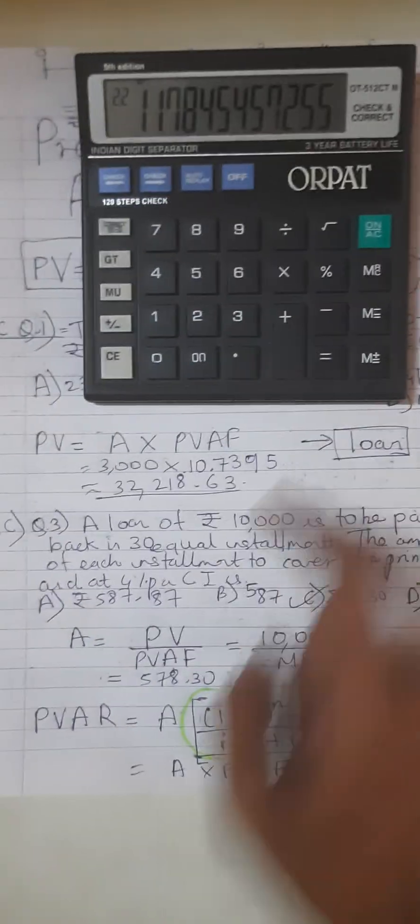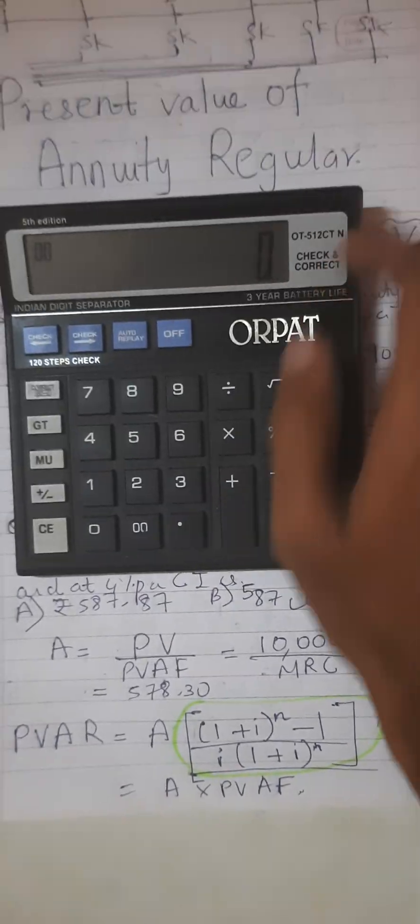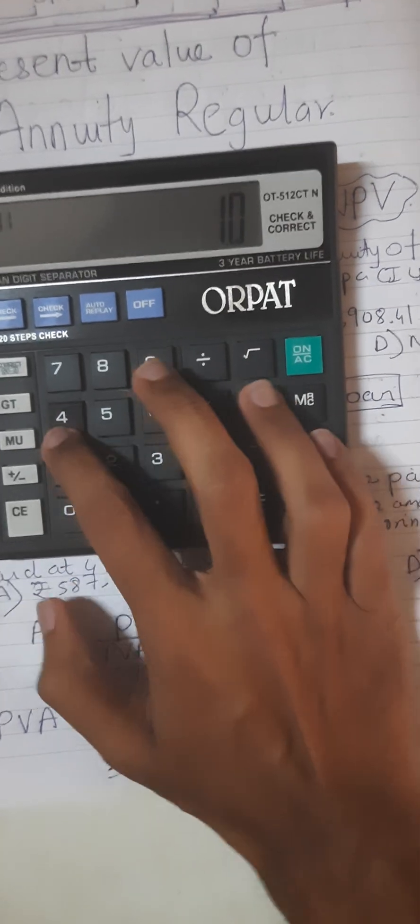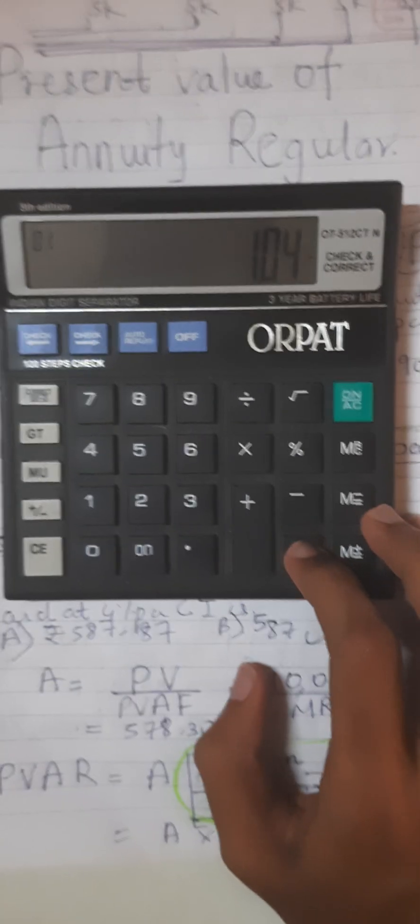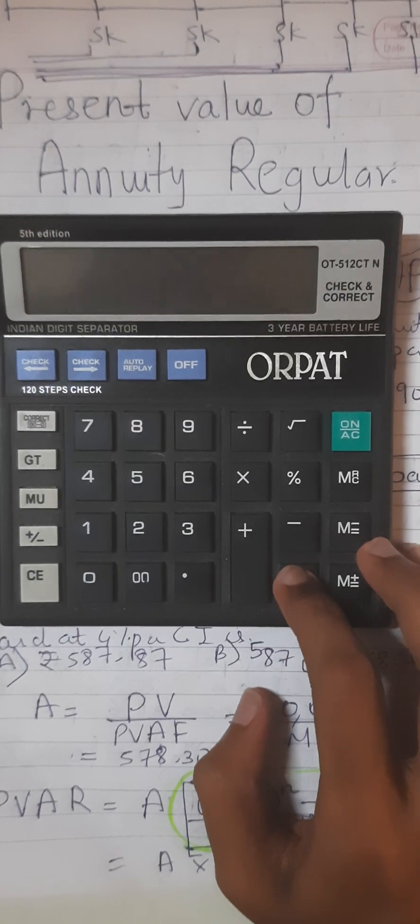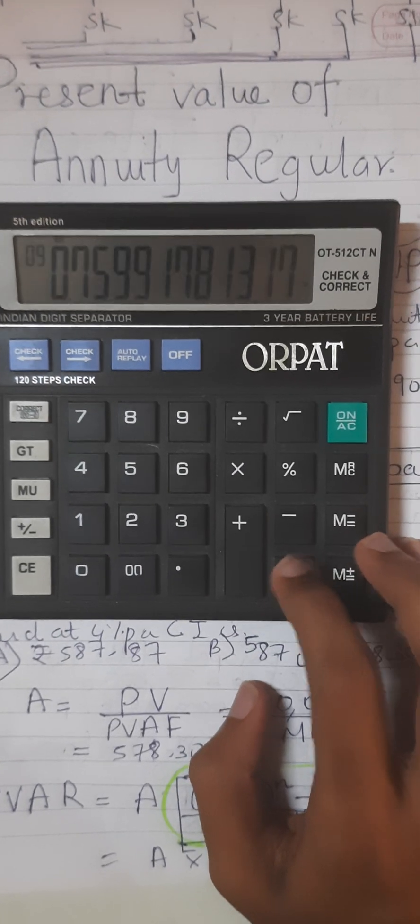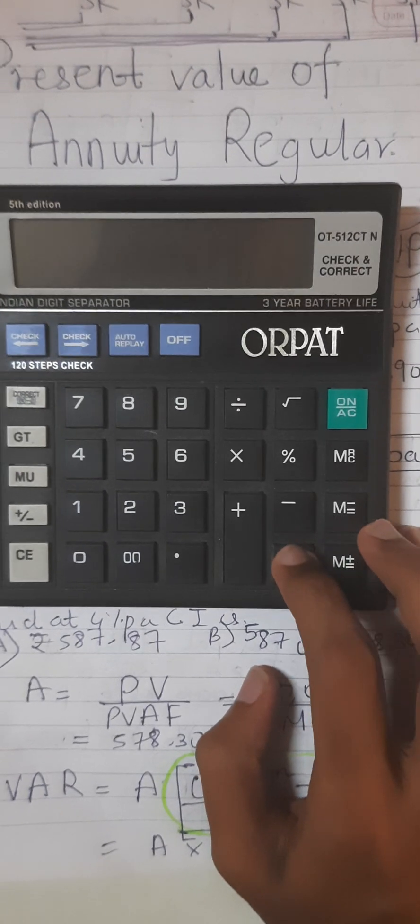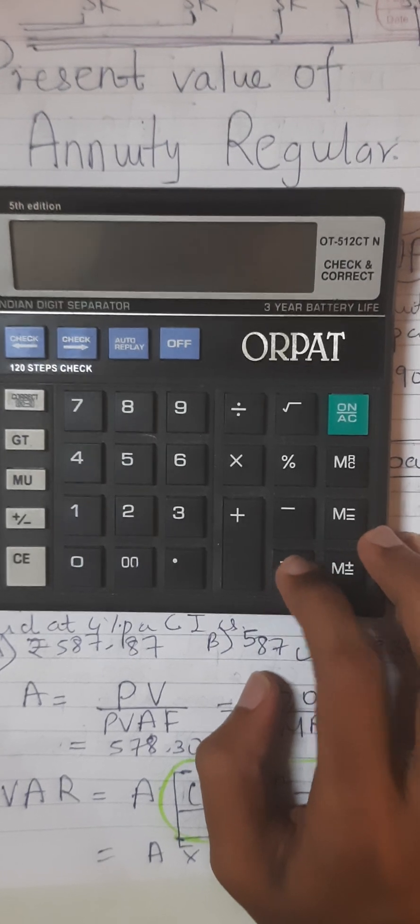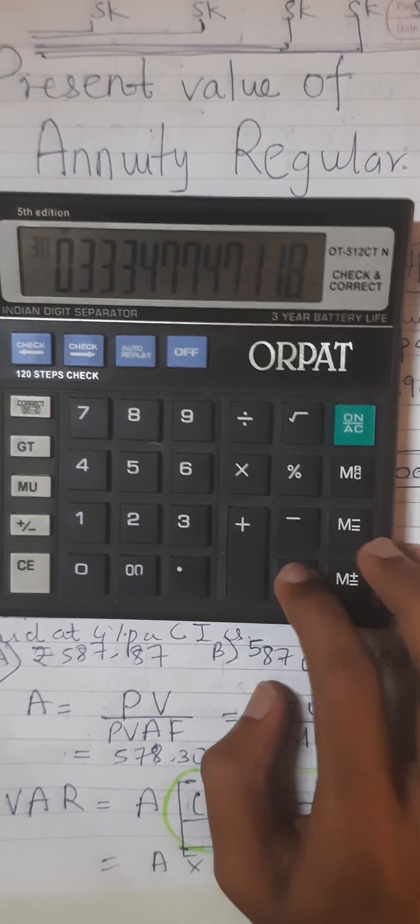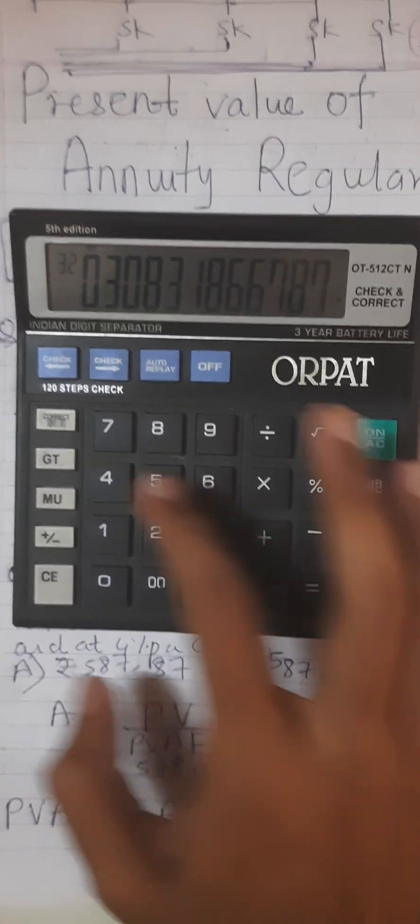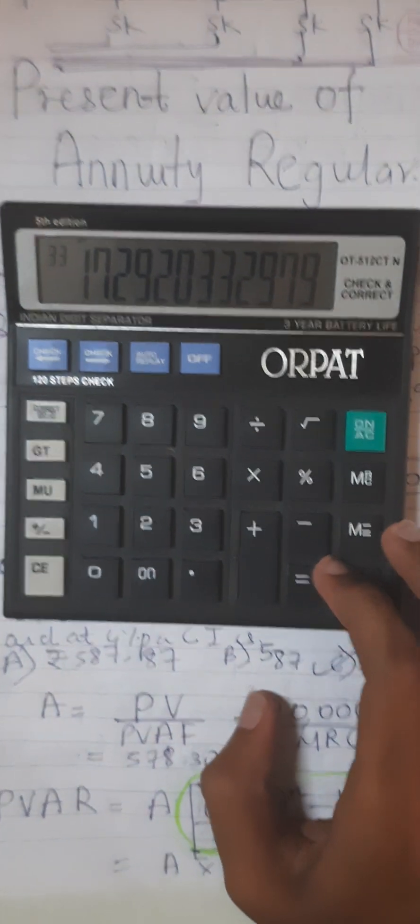So first we'll compute the annuity factor. Here it's 4%, so 1.04 divided by. Now we have to do it for 30 years, so 30 times we need to press equal to. Press equal 30 times, and now we're going to press GT.